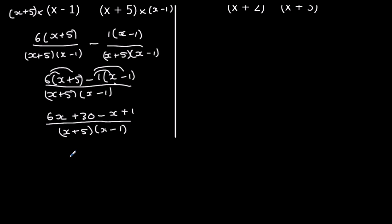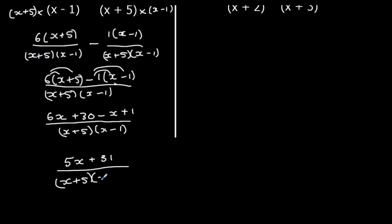Simplify the top line: we've got 5x plus 31 over x plus 5, x minus 1. I can't divide top and bottom by the same thing, so I can't simplify it anymore. That means that's my final answer.